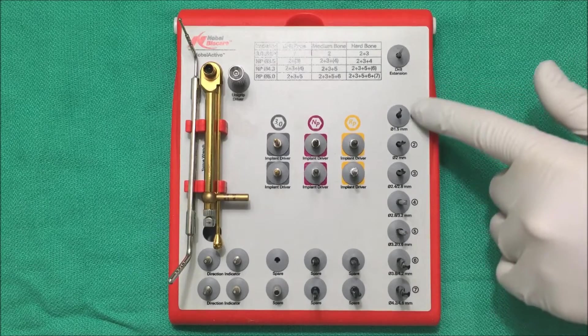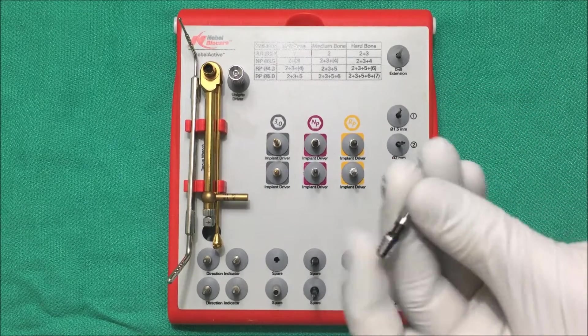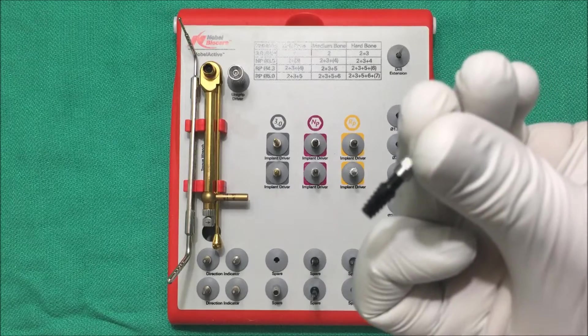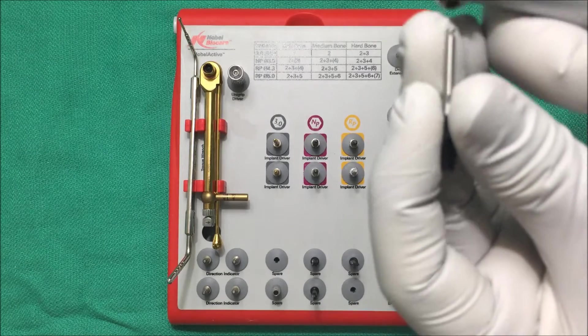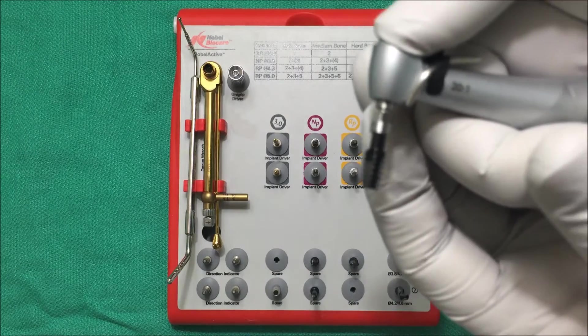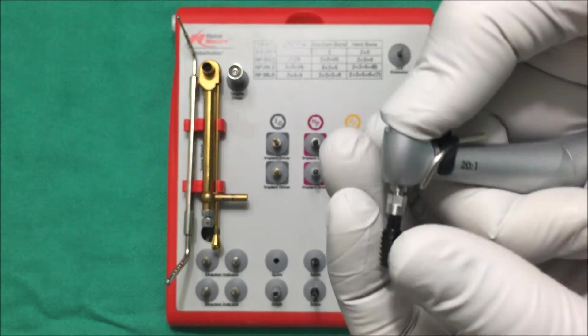So after you use your osteotomy drills you can use these drill taps to carve out some final threads on your implant site. Nobel BioCare recommends that you run this at 25 newton centimeters with irrigation.